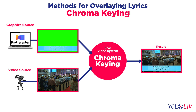The second method is chroma keying. Chrominance means the color of the image. So with this method, you specify a color to be made transparent, and any other colors in your image will be visible over your video. It's common to use green as the color to key out — you're probably familiar with the concept of a green screen — but you can also use other colors as the key color.